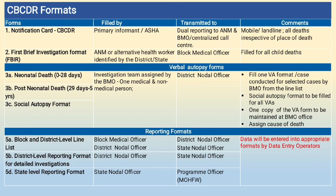CBCDR formats: notification card and FBIR — First Brief Investigation Format. The notification card is filled by the primary informant ASHA, then transmitted with dual reporting to ANM and BMO via mobile or landline. This covers all deaths irrespective of the place of death.